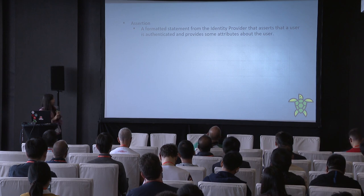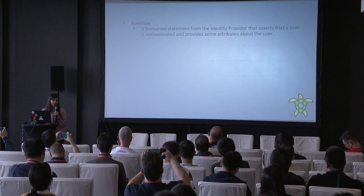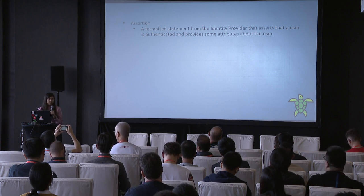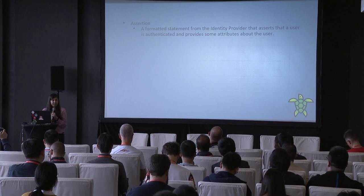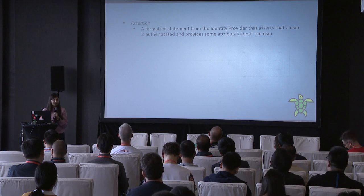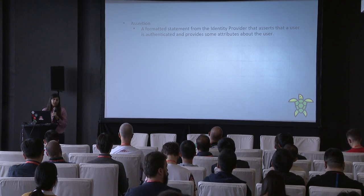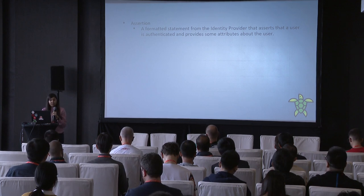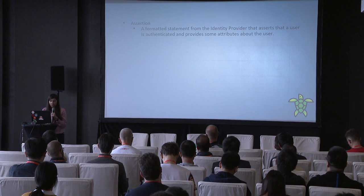Assertion is basically a statement passed from the identity provider to the service provider that contains some information about the user. The identity provider always sends the assertion encrypted and signed. Keystone is able to read that encryption, and after reading it, it recreates the local users — also known as shadow users — which we'll discuss further.